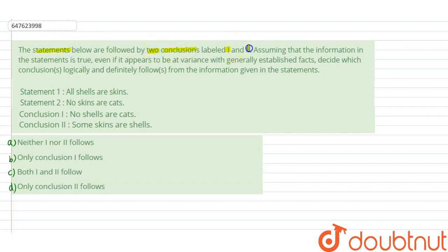The statements below are followed by two conclusions, labeled 1 and 2. Assuming that the information in the statements is true, even if it appears to be at variance with generally established facts, decide which conclusion logically and definitely follows from the information given in the statements. So, we will do this question with Venn diagram.